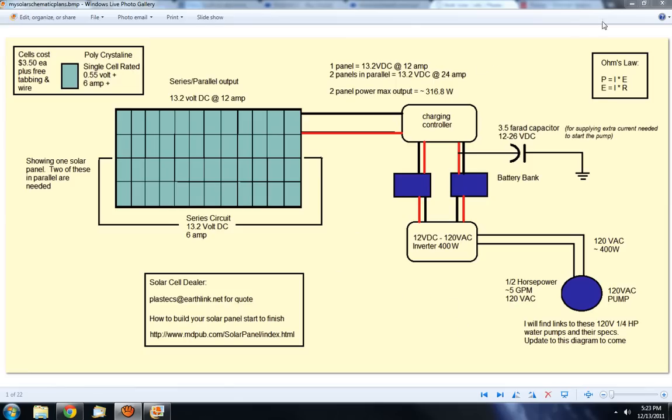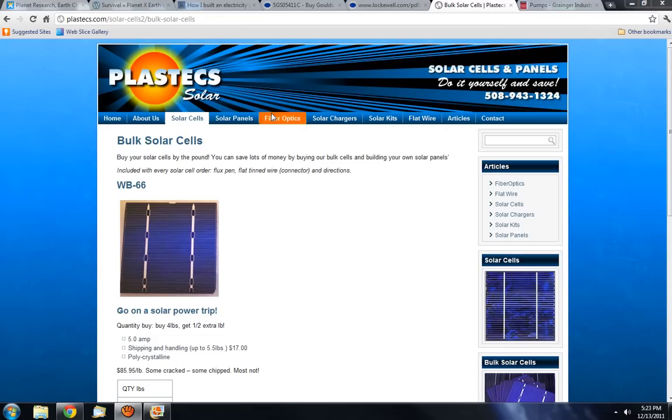Here's the site that has all your solar project needs: solar cells, entire panels, fiber optics, chargers, all the wiring and things you would need. I've already gotten a quote from these guys. They sell in bulk and single cells. I can get the cells for $3.50 a piece, so I would need 96 cells to build two panels.